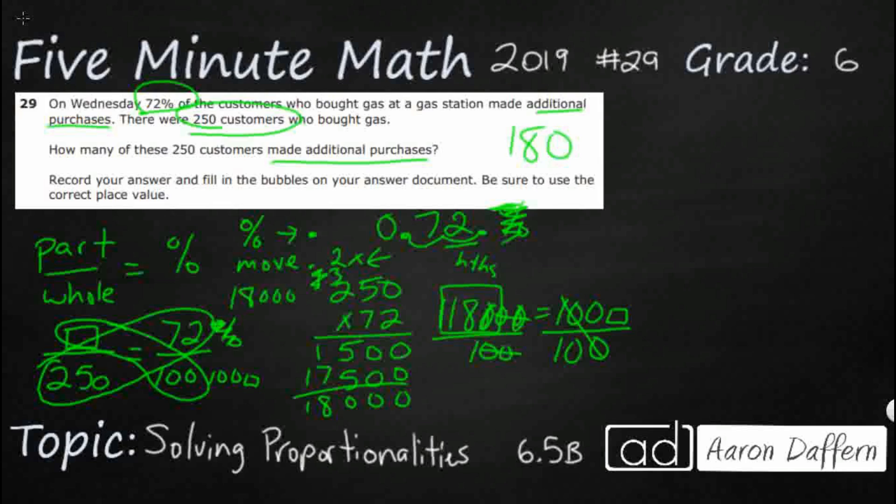So how can we do that a different way? Well, what if we know that there were 72% of 250 and we think that is 180? Well, another thing to think about is that besides the proportionality, of typically means times.